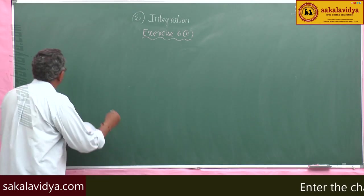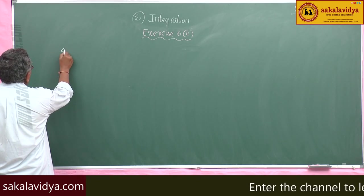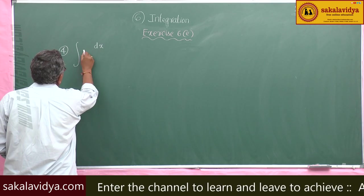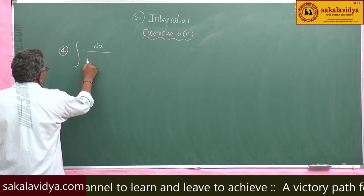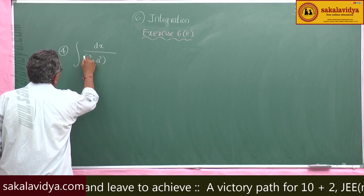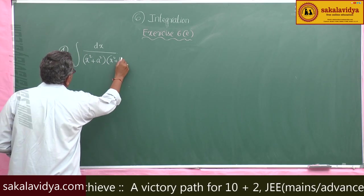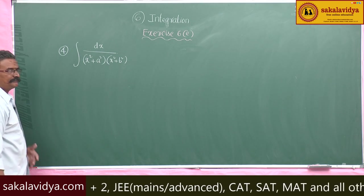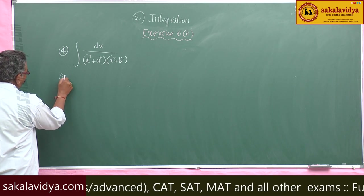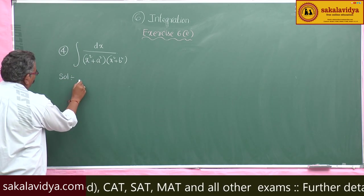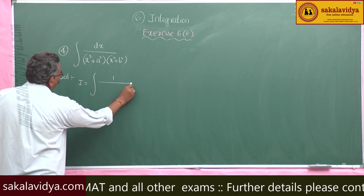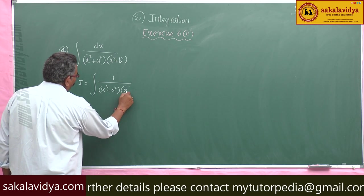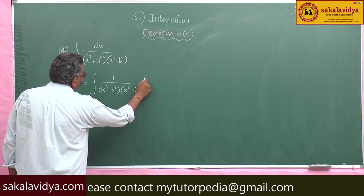Fourth problem: evaluate the integral dx divided by (x² + a²)(x² + b²). So, I is equal to integral of 1 divided by (x² + a²)(x² + b²) dx.